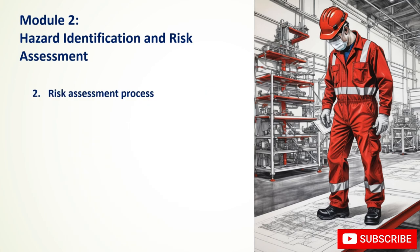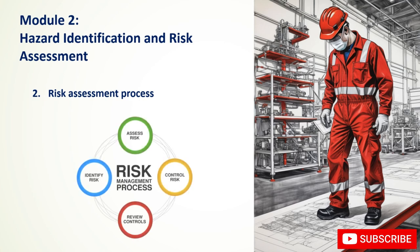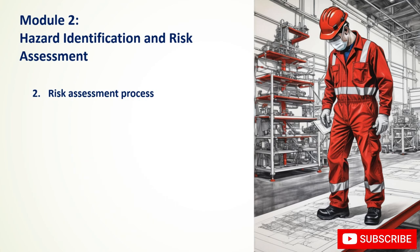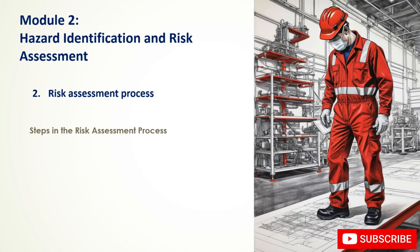A risk assessment is a systematic process of identifying potential hazards and evaluating the risks associated with them, with the goal of implementing control measures to eliminate or reduce these risks. Steps include: identify hazards through workplace inspection involving employees; evaluate risks by assessing the likelihood of harm (probability) and severity of potential consequences — risk level equals likelihood multiplied by severity; then prioritize risks based on severity and likelihood.